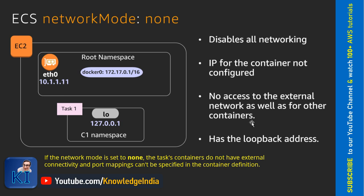There are two more modes to cover briefly. The first is None. If you don't want any networking at your container level, you can choose None — it disables all networking and no IP is configured at the container level. Containers will have no external connectivity and you cannot do any port mappings. You would rarely use this — perhaps for a container that just runs some processing, writes results to a volume, and exits.